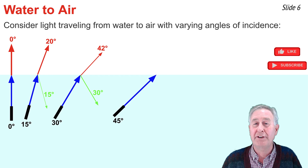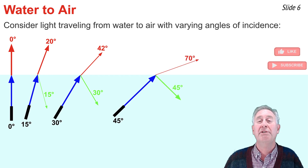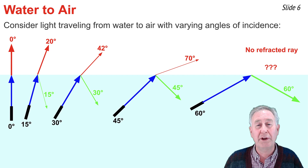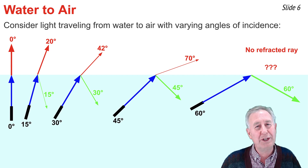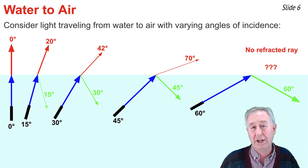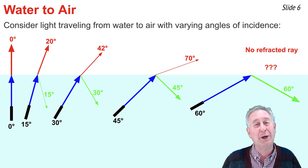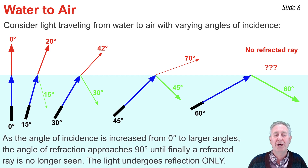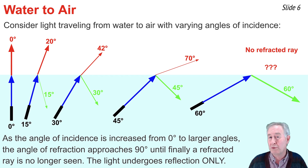At an angle of incidence of 45 degrees, we see a very dim refracted ray and a very bright reflected ray. At 60 degrees, the reflected ray is really bright, but there is no visible refracted ray whatsoever. In fact, somewhere around an angle of incidence of 49 degrees the angle of refraction reaches 90 degrees, placing a very dim refracted ray along the boundary line. At any angle of incidence greater than 49 degrees, the refracted ray totally disappears — it is 100% reflection.